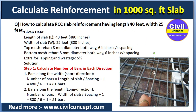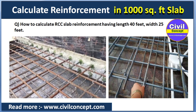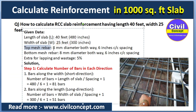In this slab there are two meshes — top mesh and bottom mesh. You can see in the picture that one mesh sits on top and another is below it. For the top mesh, rebar runs in both directions, and for bottom reinforcement also the rebar runs in both directions. The top mesh rebar has 8 mm diameter in both directions with 6 inch spacing.